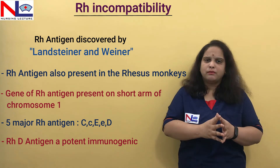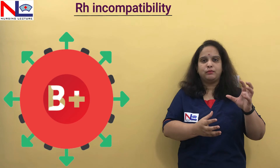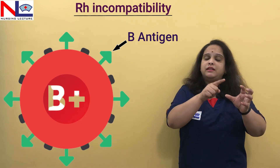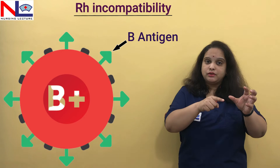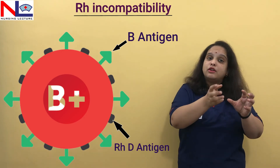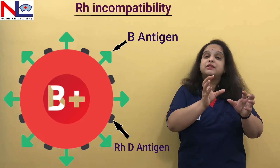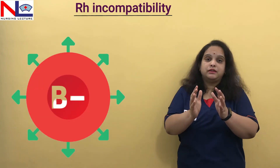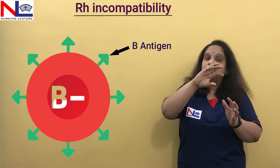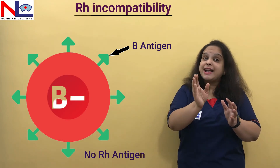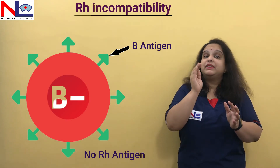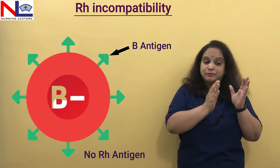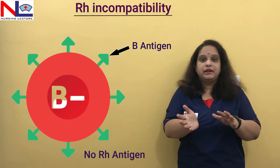How do blood groups form? Suppose a person has blood group B — on the surface of their RBCs there will be a B antigen. If the RH antigen is also present on the same RBC, then that person has a B positive blood group. But if another person carries the B antigen on the RBC surface but lacks the RH antigen, then their blood group would be B negative. So the presence or absence of the RH antigen denotes whether a person is positive or negative.